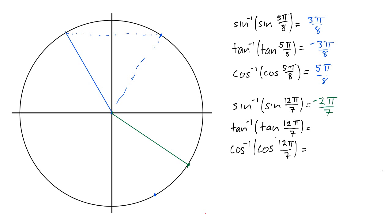How about tangent inverse of tangent of 12π over 7? Well, same deal, we're in the correct place, we don't need to rotate at all or reflect over the y-axis, so we just need to give it the right name, which is negative 2π over 7.